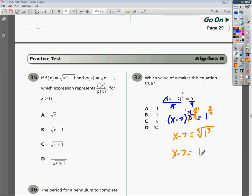So now, all you have to do is solve this equation, add 7 on both sides, and you get x equals 8. And you're going to find that that's going to be choice C.